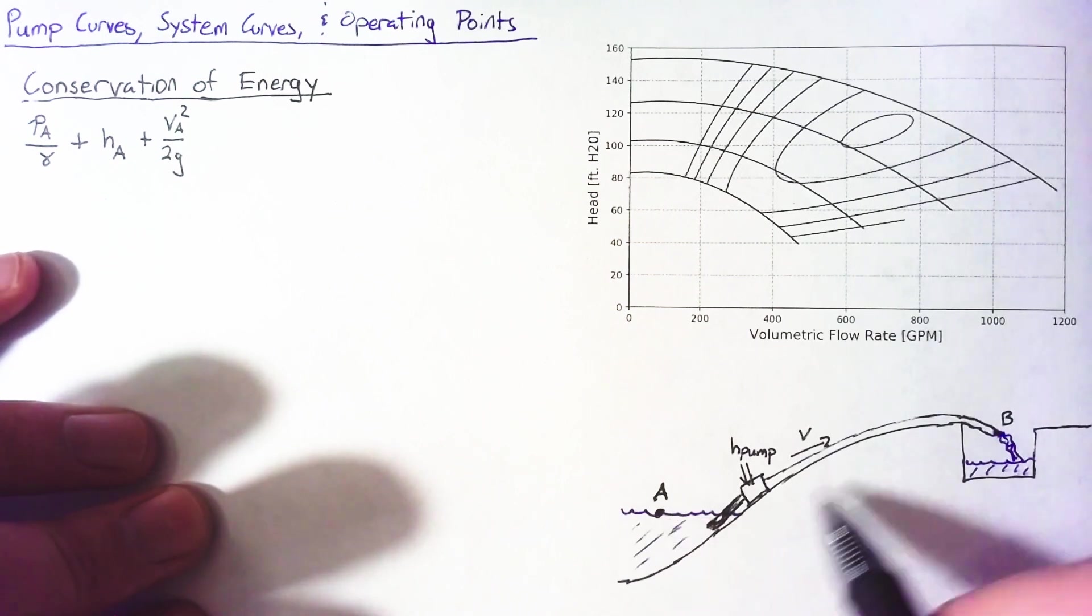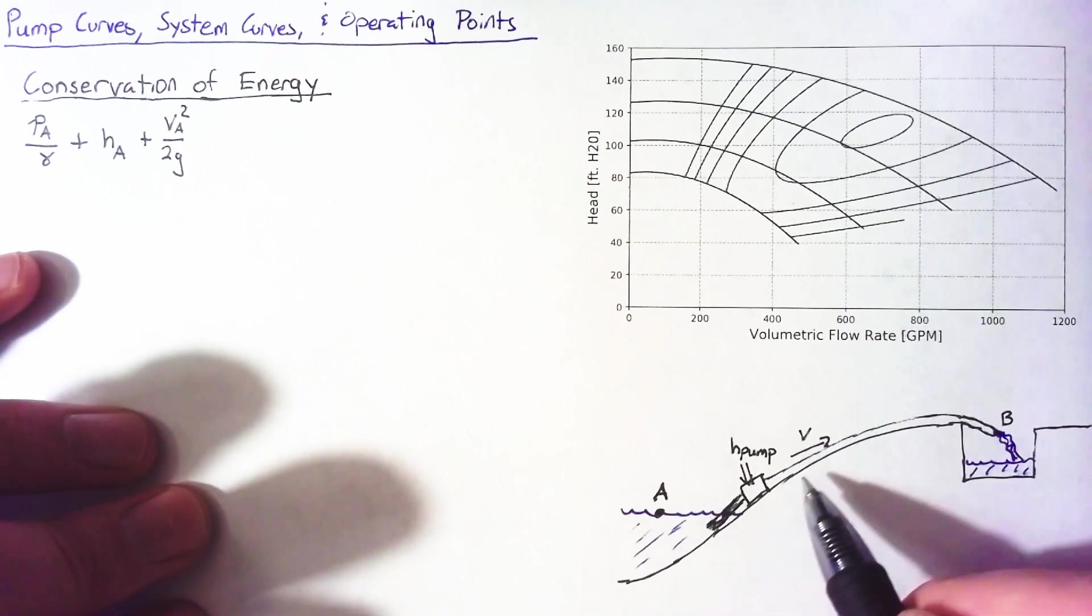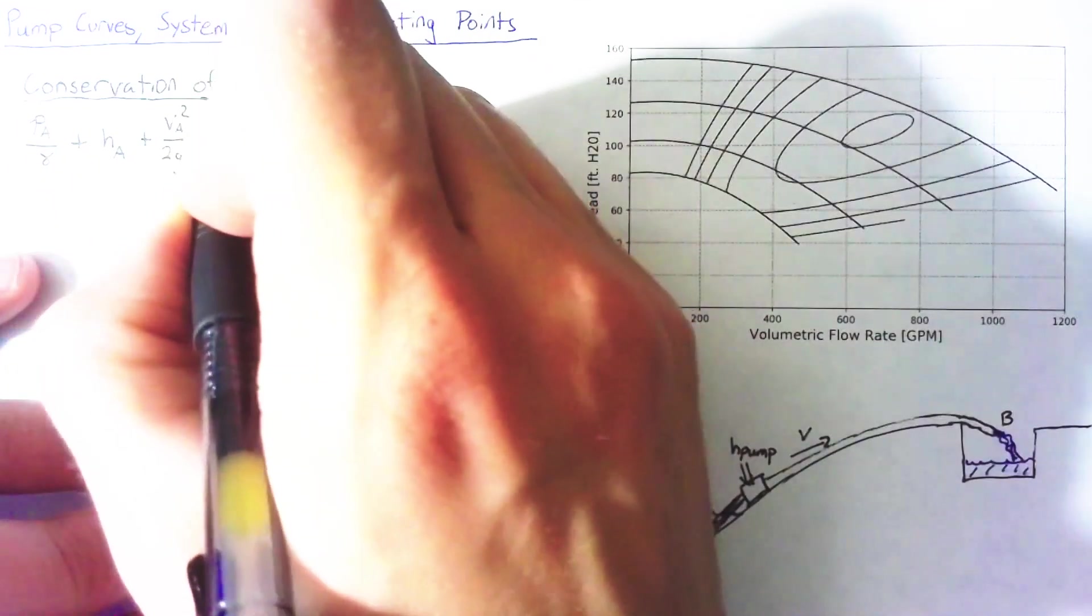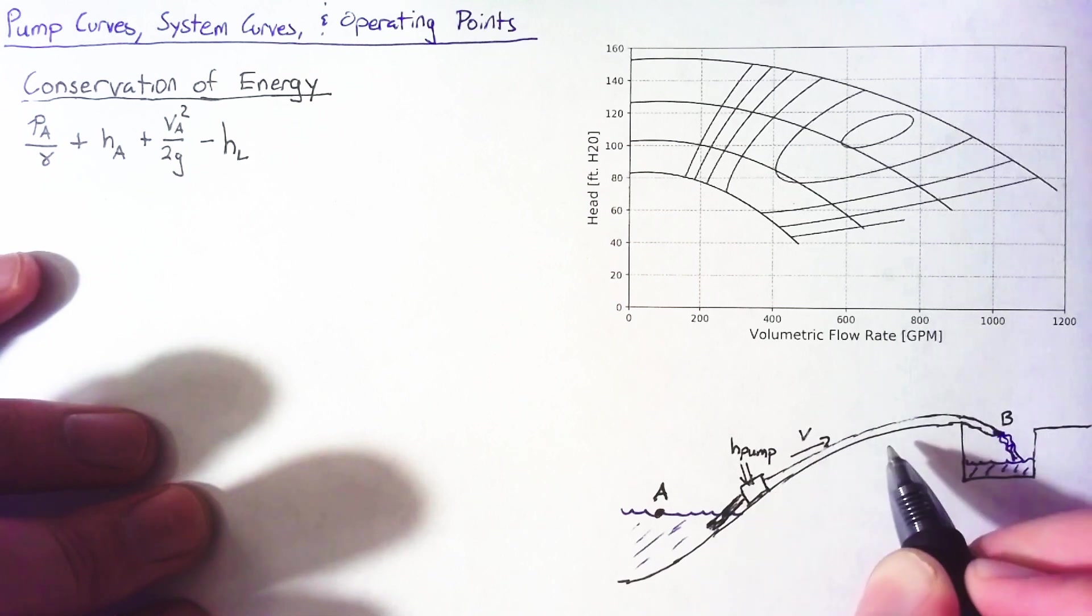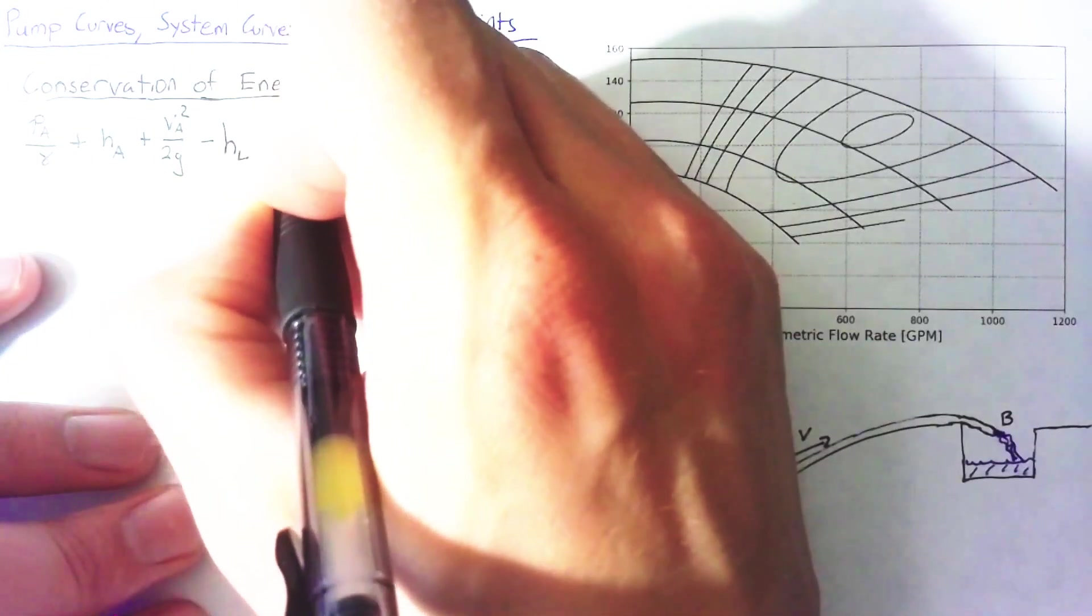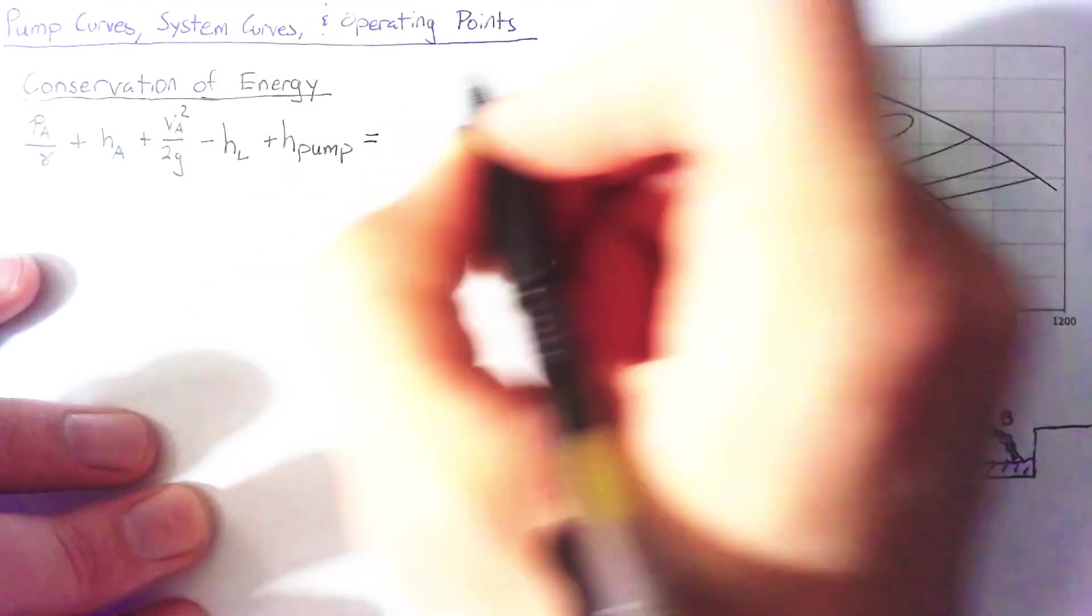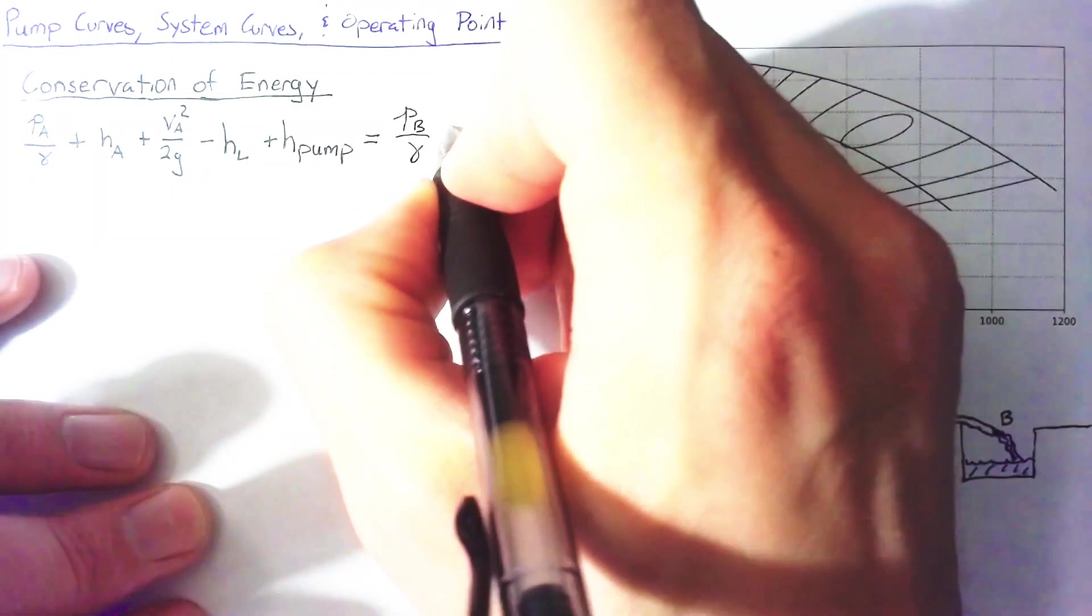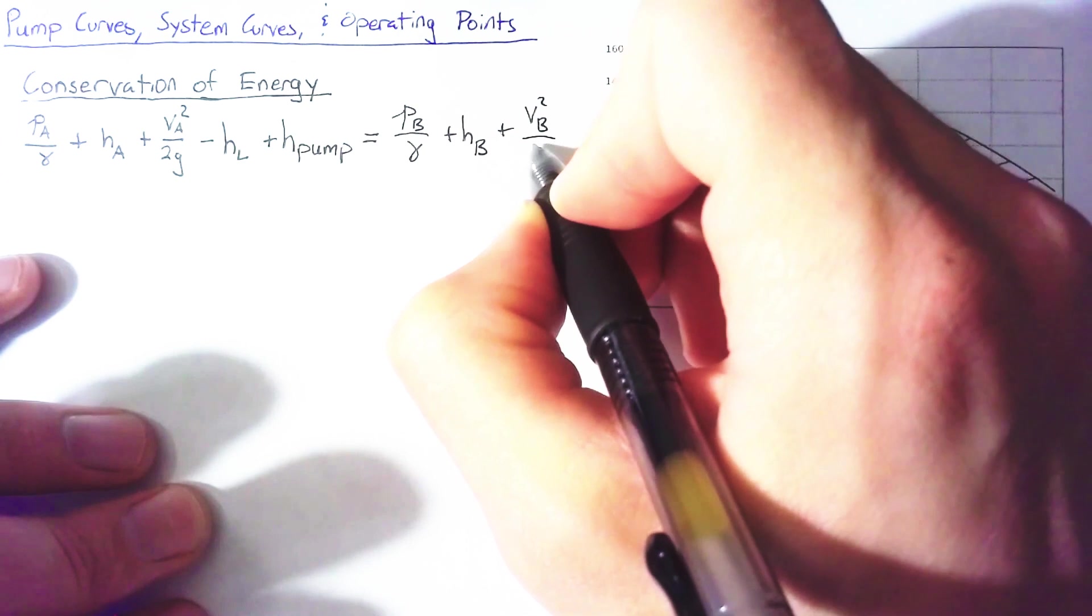Now to get from point A to point B, two things happen. One is that we're going to be losing some energy due to friction through this pipe. The second is that we're going to gain some energy, because this pump is going to be pushing our fluid along. That I'm just going to refer to as the head from our pump. And that gets us to point B. Point B is going to, again, have some pressure, some amounts of head, and finally, some amounts of velocity.